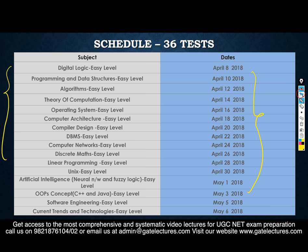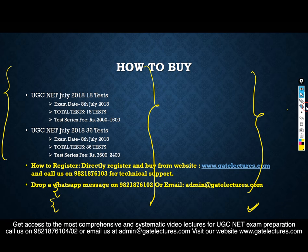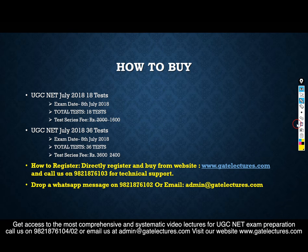The second schedule is for the 36 tests. Initially all easy level tests will be published, followed by all medium level tests. The test series finishes on 4th July, covering paper 1 and paper 2 at both easy and medium difficulty levels.